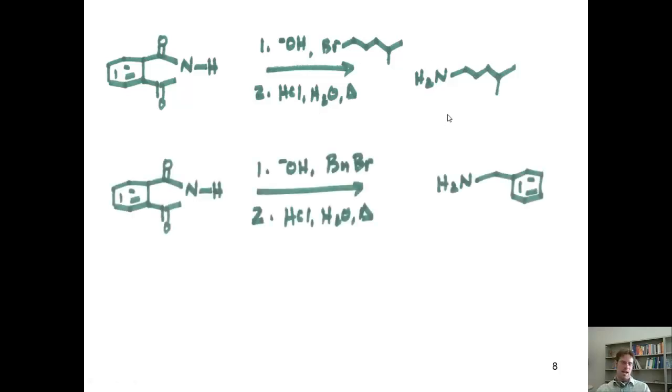The next question asks how I could get benzylamine. Now, you should remember that a benzyl is a name we give to a benzene ring that has a CH2 attached to it. So, this product right here is benzylamine. If I want to form that, I stir phthalimide with hydroxide and benzyl bromide. And then take that intermediate and treat it with HCl, water, and heat. It liberates the primary amine as my major product.